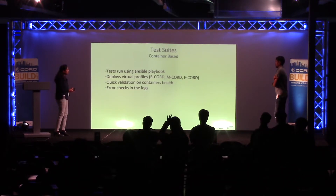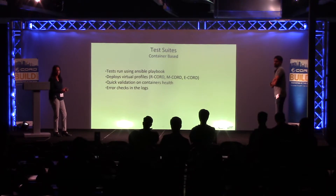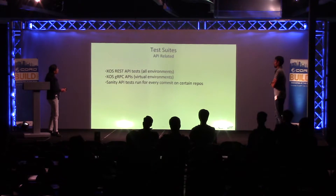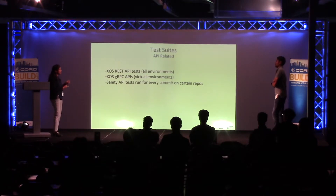We have container-based tests used for sanity checks on virtual environments, validating container states after deploying a specific profile — whether E-CORD, R-CORD, or M-CORD — verifying that service processes are running in containers and that there are no errors. These are yet to be improved further. We also have API-based tests, mostly REST API tests from XOS, and we have automated gRPC API tests running on virtual environments, all run through Jenkins jobs to validate commits.